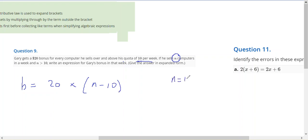Because if n equaled 12, he'd get bonuses on 2 of them because we minus the first 10. If n equaled 15, he'd get bonuses on 5 of them.